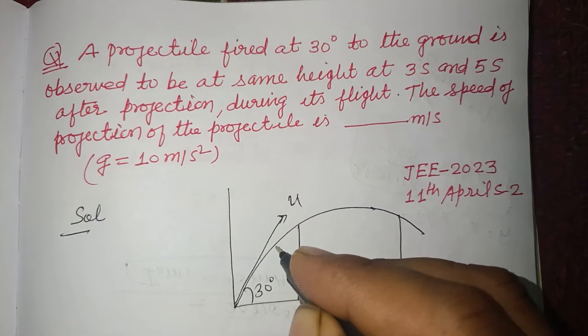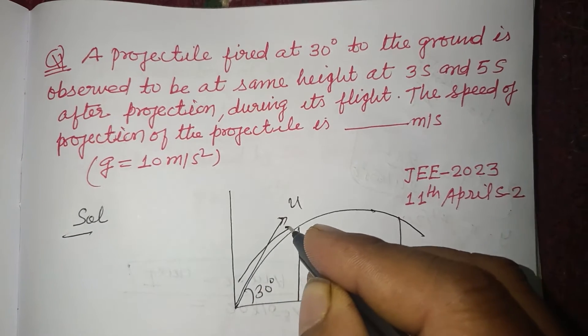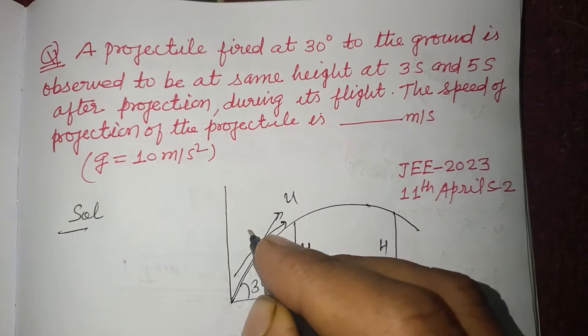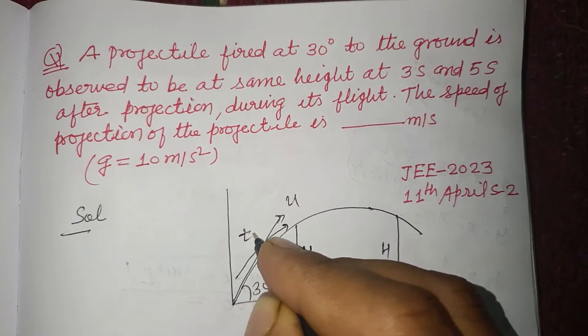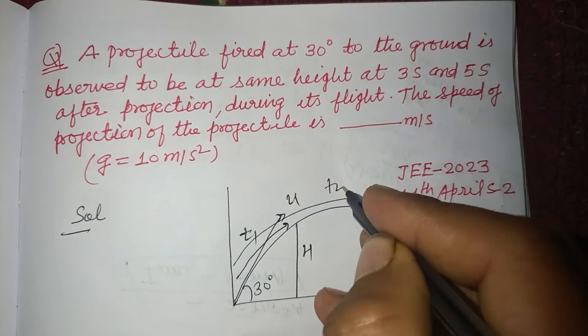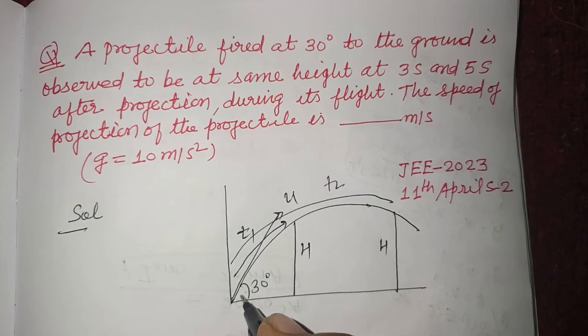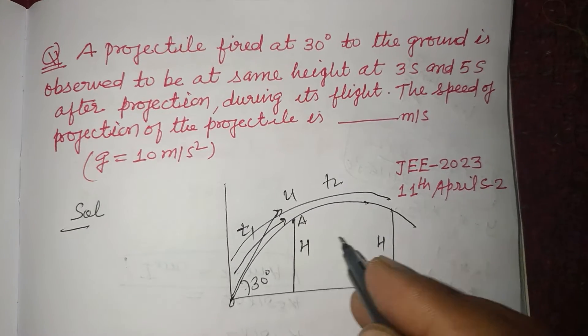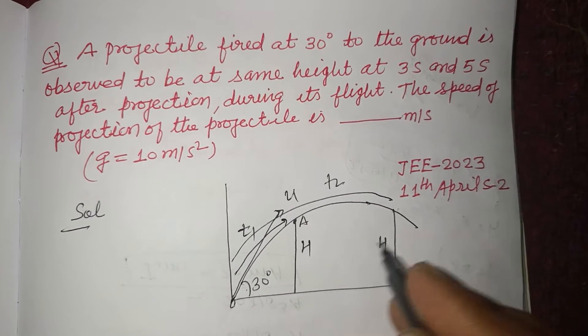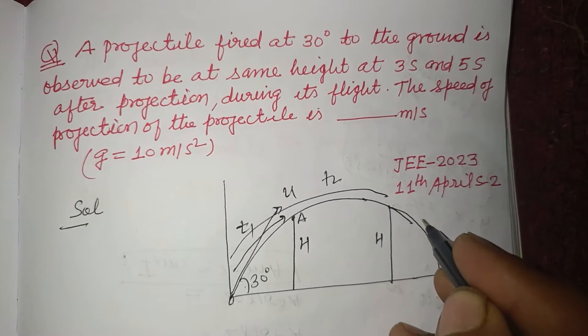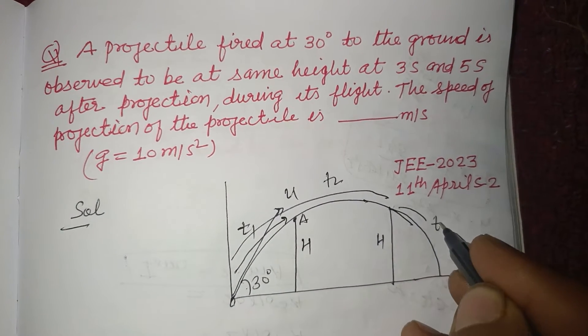From here to here this is height h, this is time t1 and this is time t2. From zero to A, time of ascent to the same height equals time of descent from the same height, which is t1.